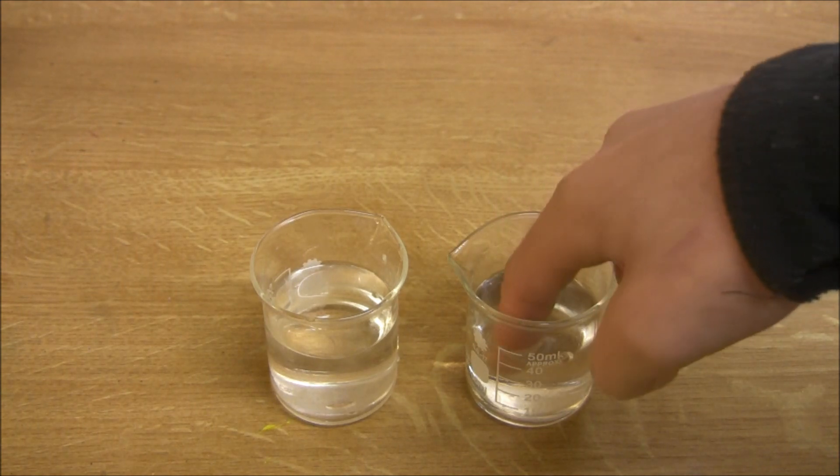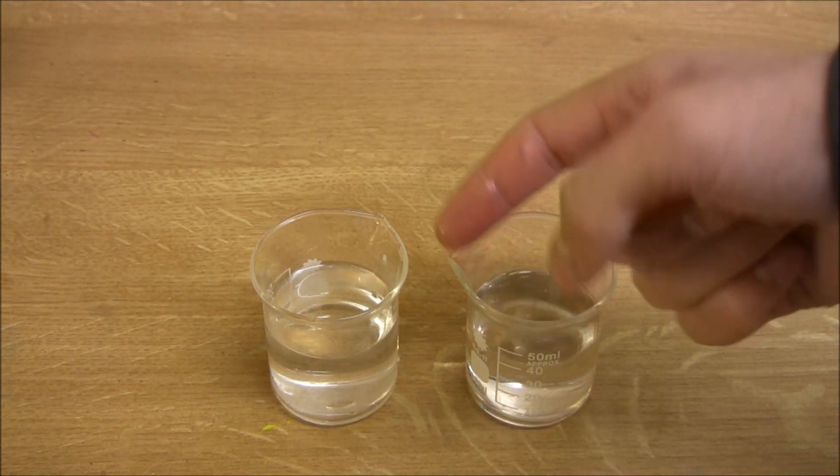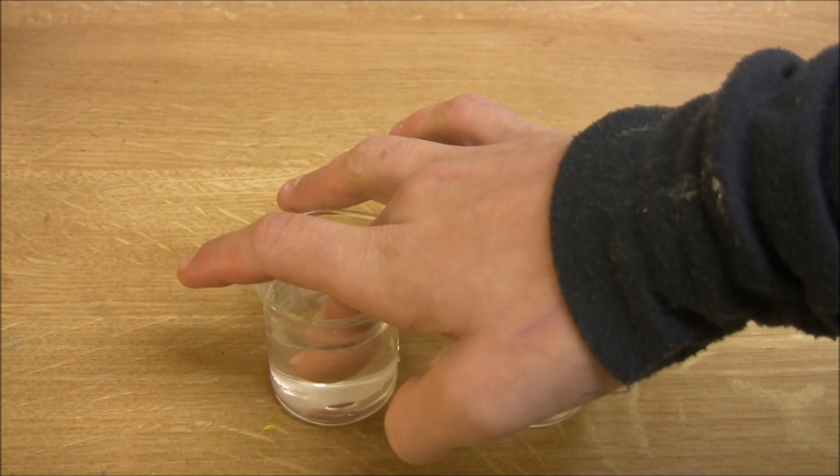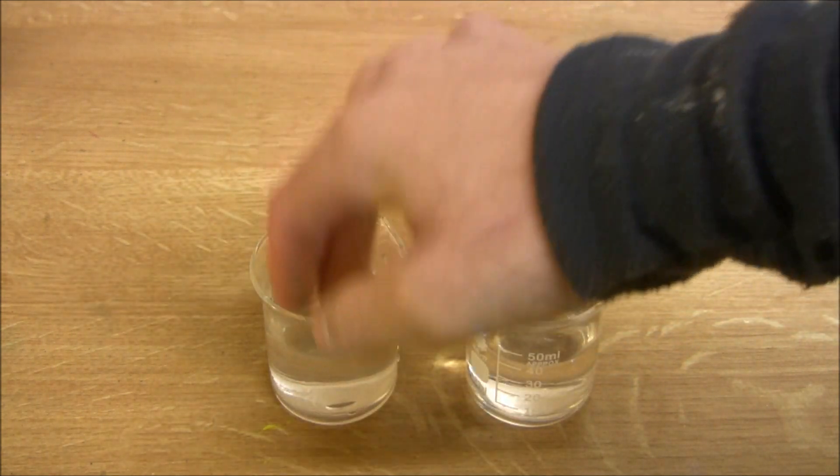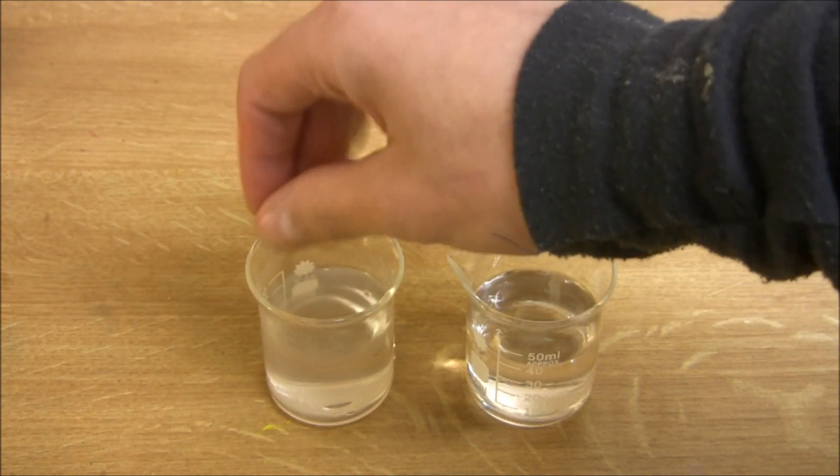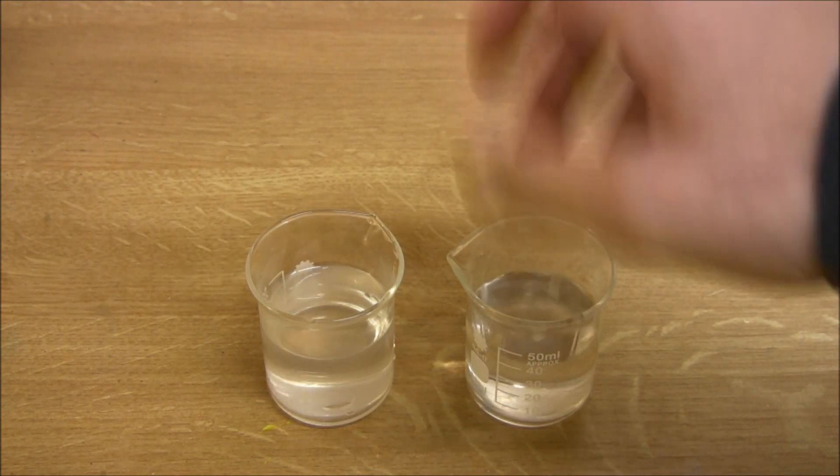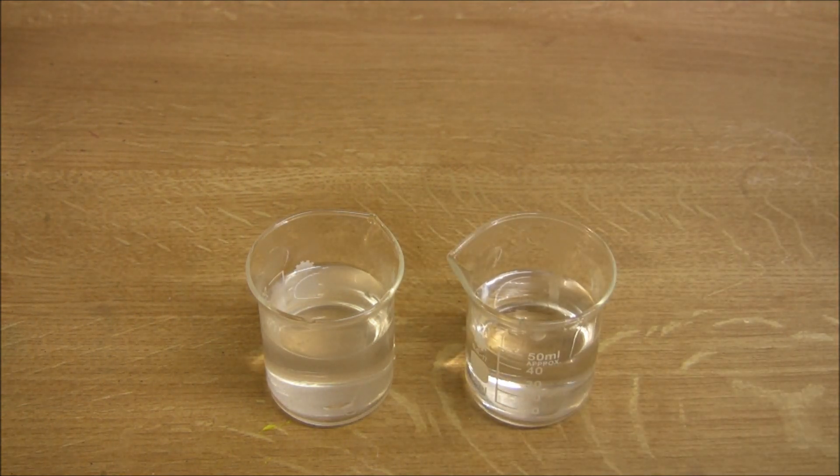And you can tell it's more volatile because when you put your hand in it and put it out, it feels cold. And that's because it's evaporating. With the water, on the other hand, it feels a lot warmer. The water feels a lot more gloopy than the rubbing alcohol. And we're going to look at why this is and how it works.